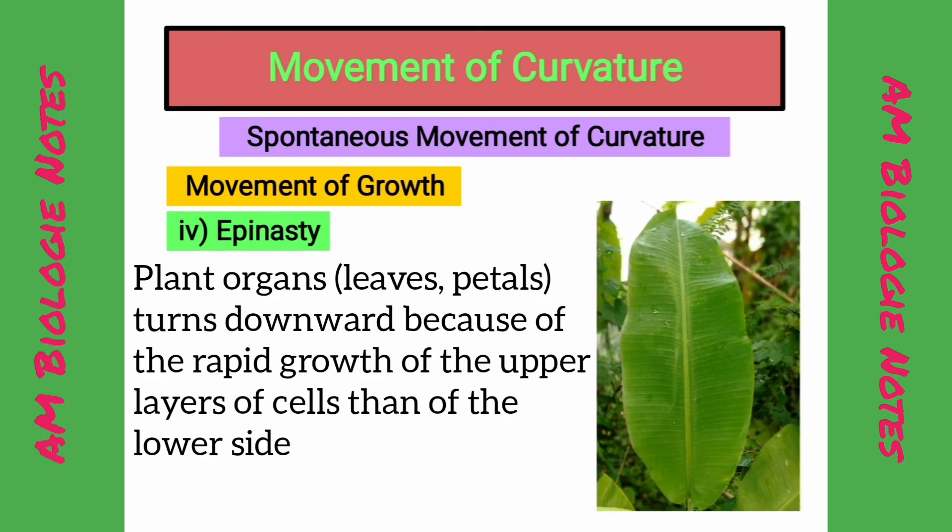Epinasty: It is the condition in which an organ, such as a leaf, turns downward because of the more rapid growth of the upper layers of cells than of the lower side.